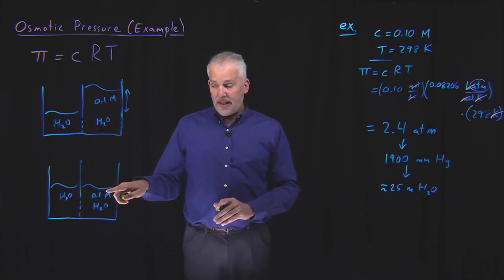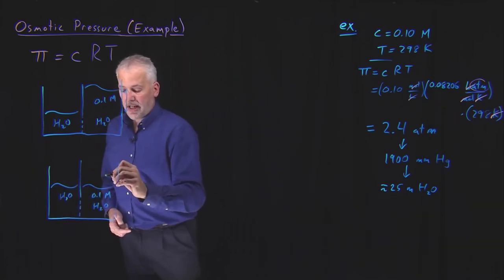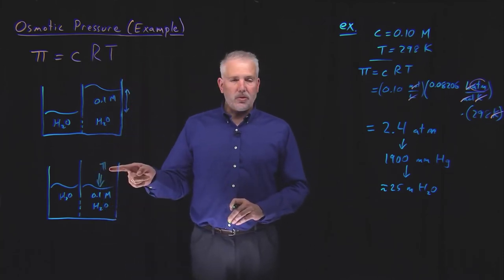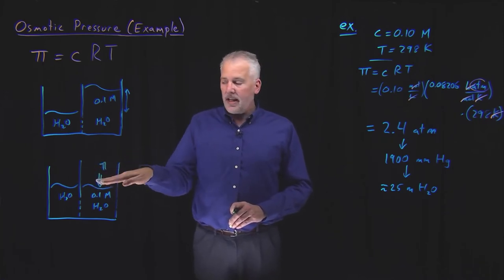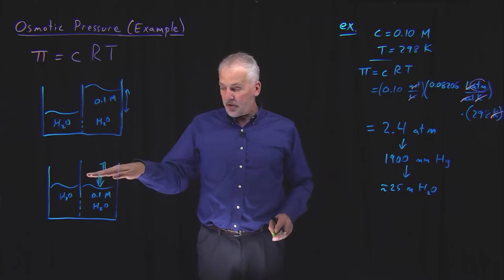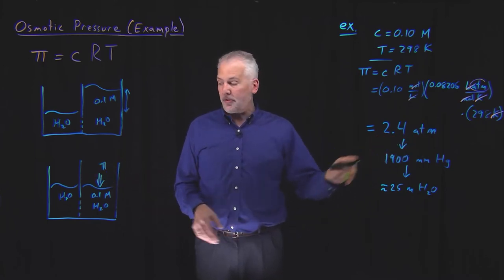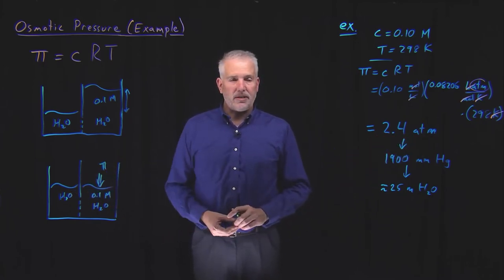If I allow osmosis to happen, the solvent will drop and the solution side will rise. If I want to prevent that from happening, I need to push down with an additional pressure equal to the osmotic pressure on this side. If I push down with pressure harder on this side than this side, if that pressure is equal to the osmotic pressure of 2.4 atmospheres, then I can keep these two sides in equilibrium.